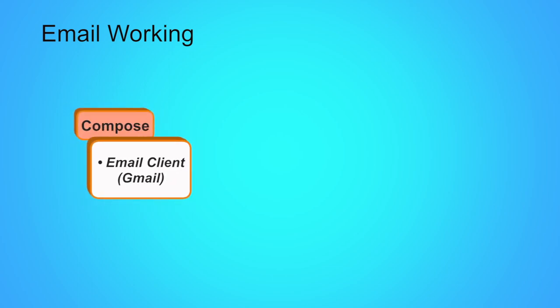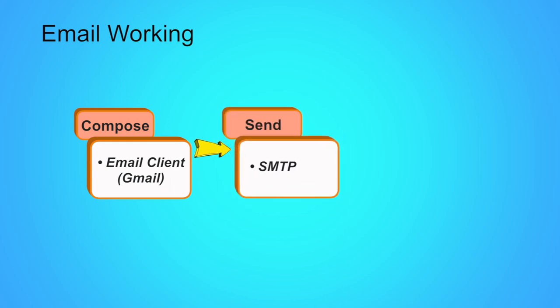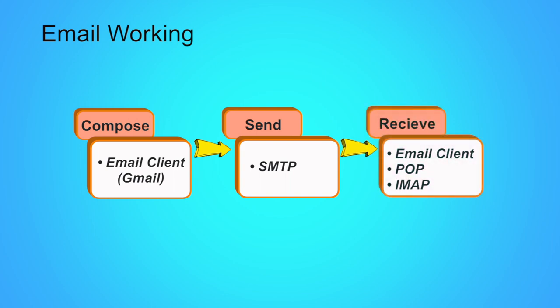How does emailing work? The sender composes a message using the email client on their computer. When the user sends the message, the email text and attachments are uploaded to the SMTP server as outgoing mail. All outgoing messages wait in the outgoing mail queue while the SMTP server communicates with the DNS to find out where the recipient's email server is located. If the SMTP server finds the recipient email server, it will transfer the message and attachments. If the recipient server can't be found, the sender will get a mail failure notification in their inbox. The next time the recipient clicks Send and Receive, their email client will download all new messages from their own email server — and now you have got the mail.